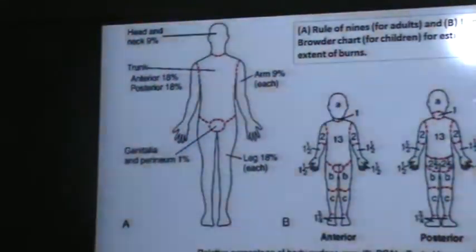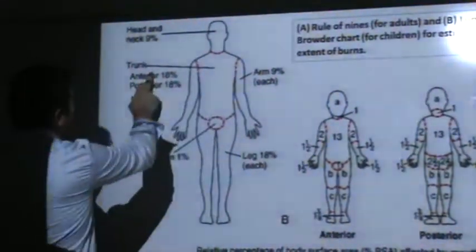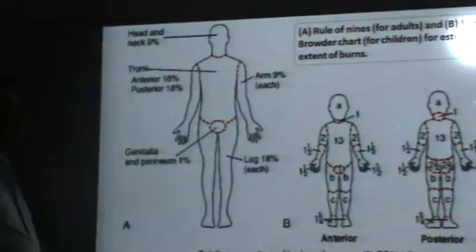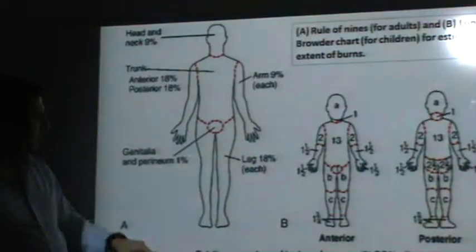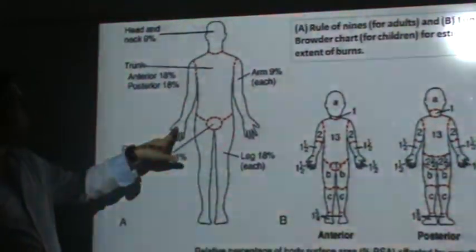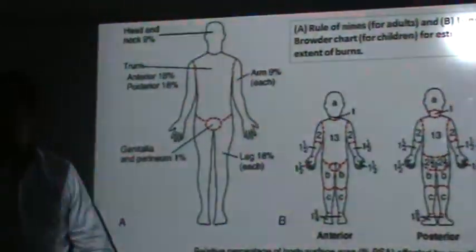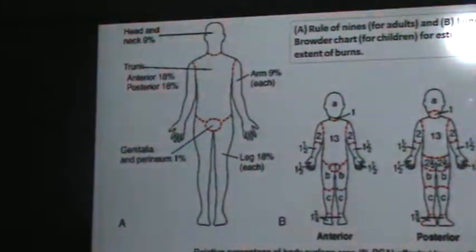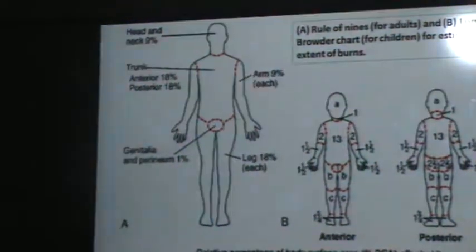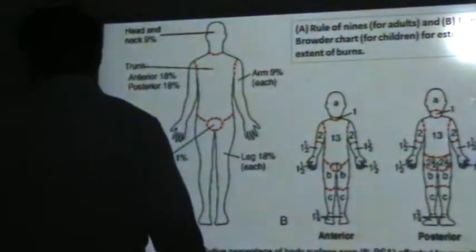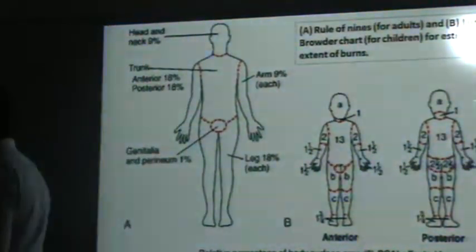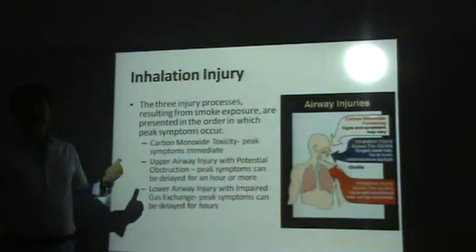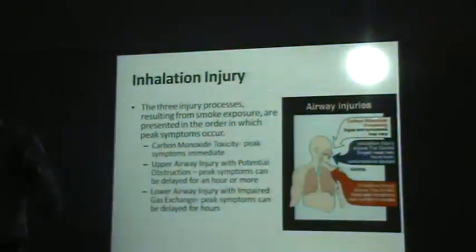For calculating burn percentage: the front of the chest is 18%, the palm is 1%, the head is 9%. So the front chest plus head equals 27%.